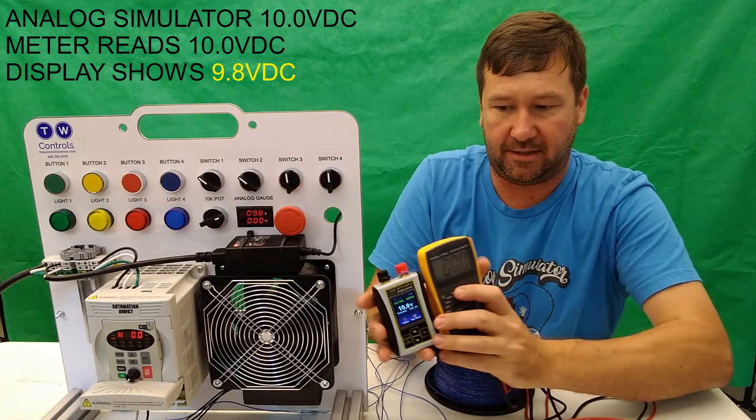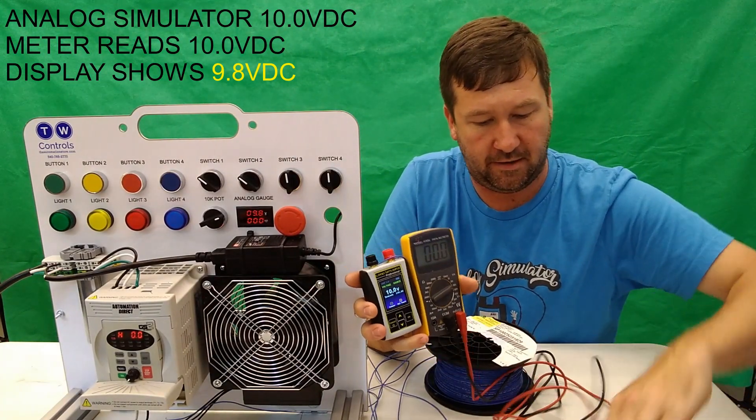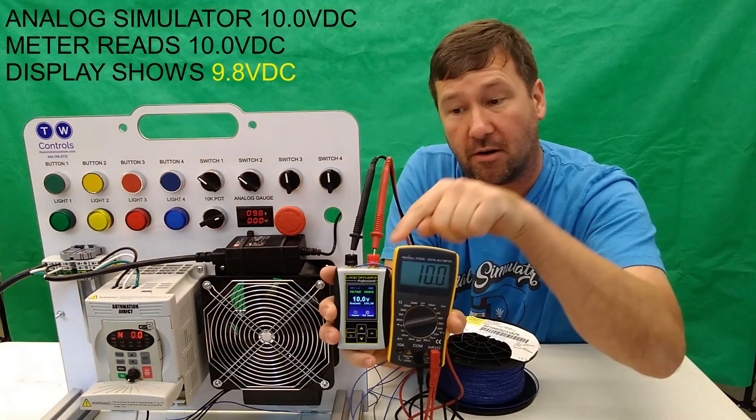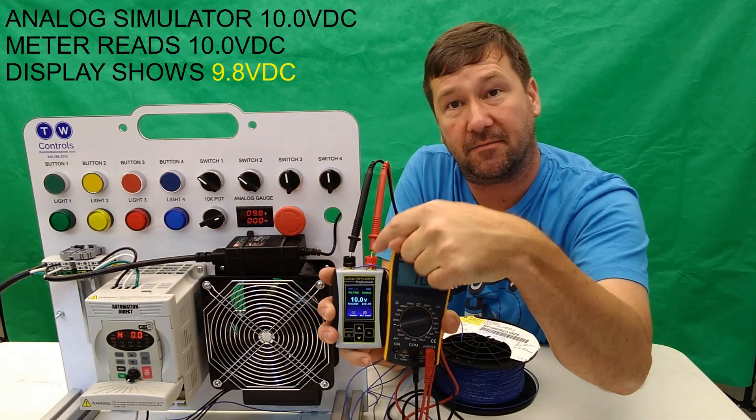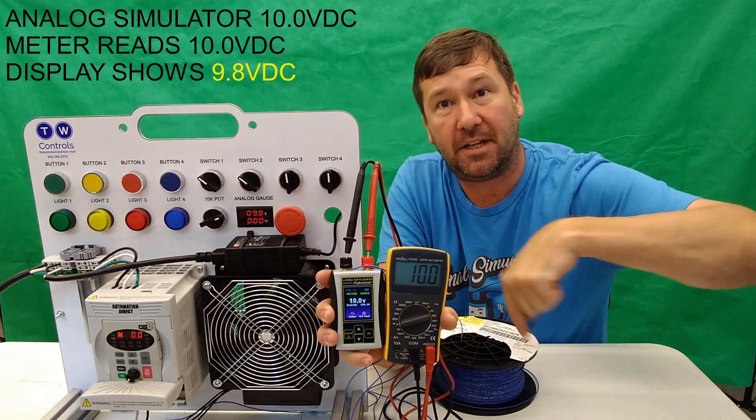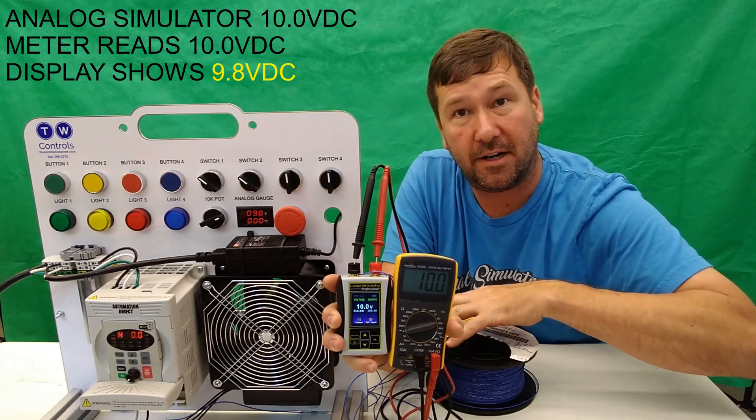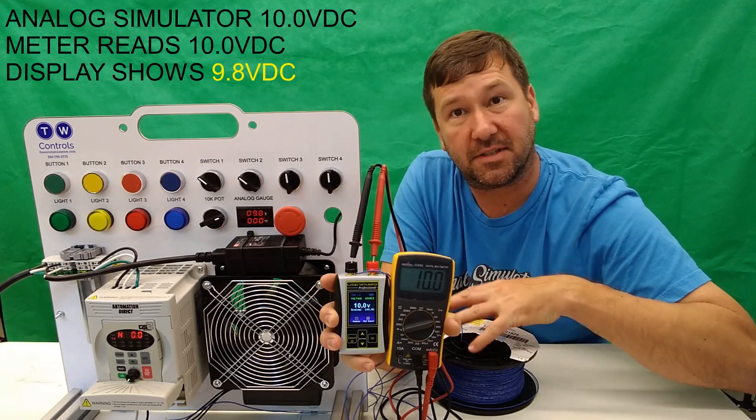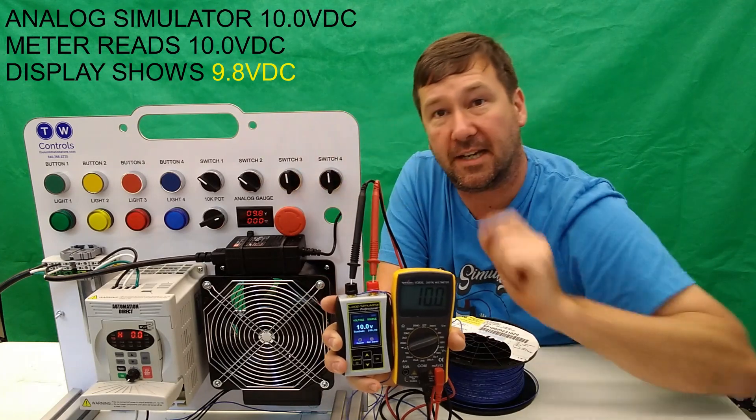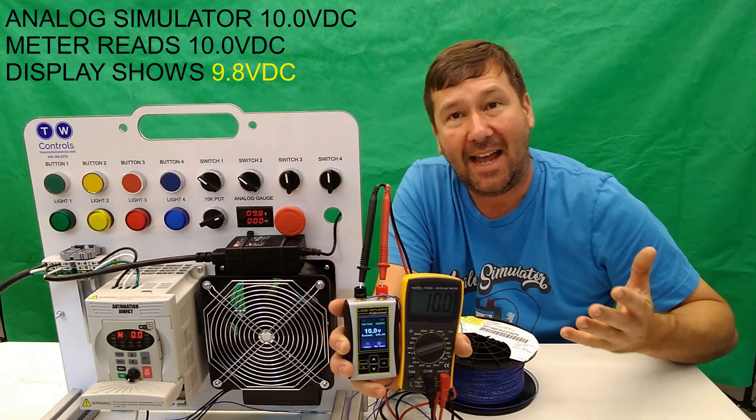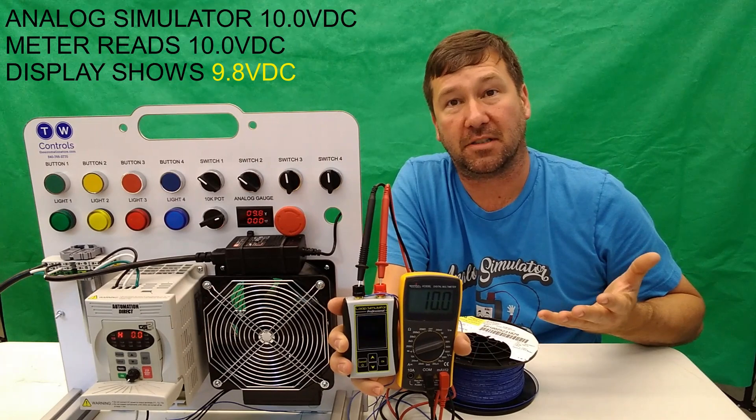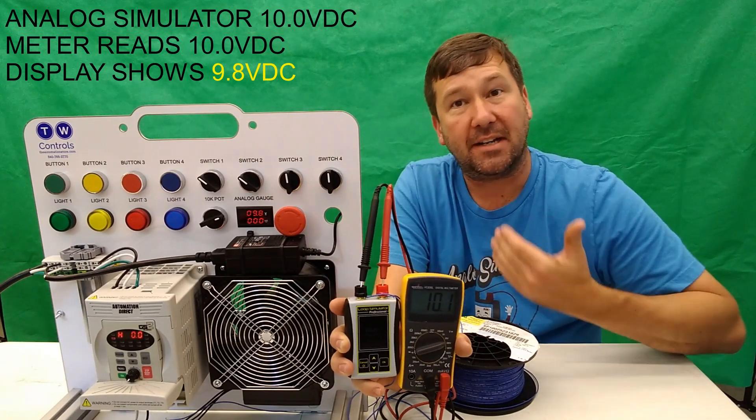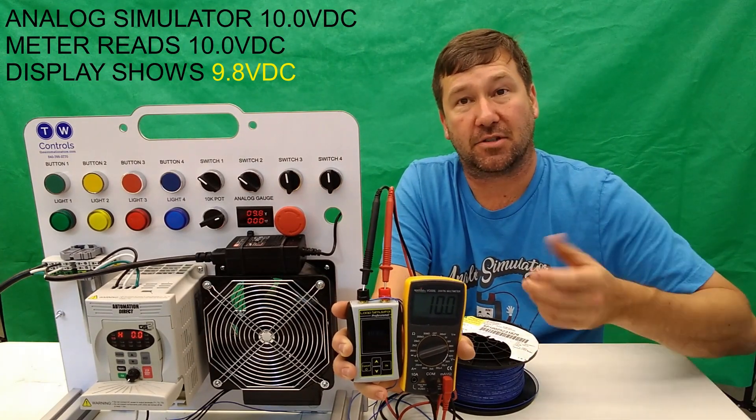Now just to verify that nothing is going wrong with our simulator, we're going to connect the meter. Our simulator is putting out 10 volt, but by the time we go through all of this wire here, it's creating enough resistance and voltage drop that we're only getting 9.8 volt to our meter. And that's the problem with a voltage signal is that over any amount of distance, you're going to have voltage drop.